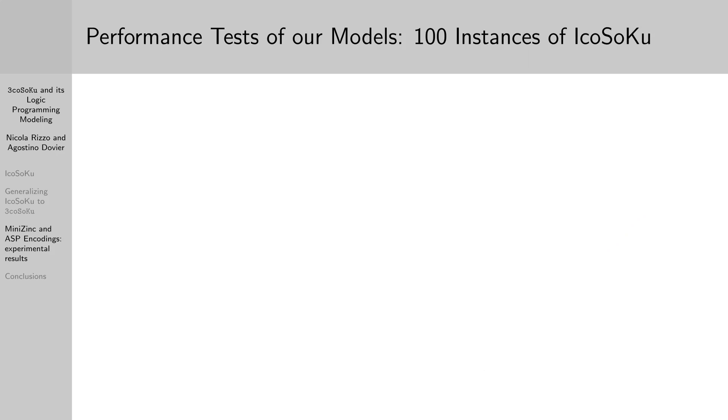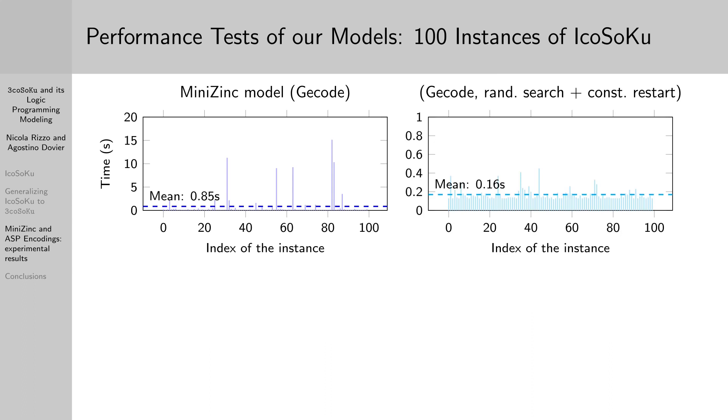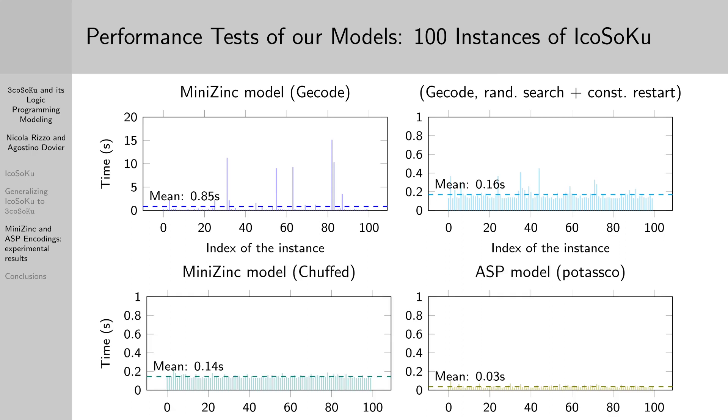We encoded 3coSoKu in MiniZinc and in answer set programming, and we now present some experimental results of the following models on 100 instances of Icosoku. First, we tested G-code that behaves like a backtracking algorithm would, in the sense that it sometimes can be unlucky and explore a big sub-tree of the search space without finding a solution. This can be improved a lot by using a different search strategy, consisting of a randomized search with restart, and this is very effective because there seems to be many different solutions to each instance. But actually, the solvers that perform the best are those using some sort of learning, that is Chuffed and Clingo for the ASP encoding.